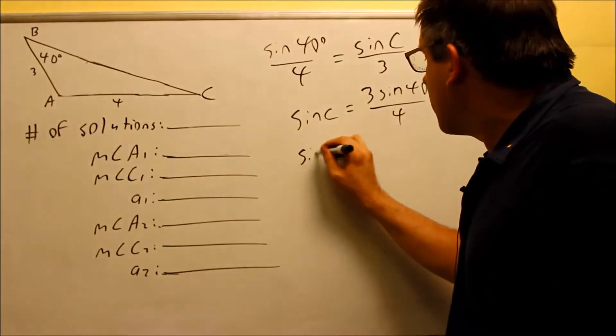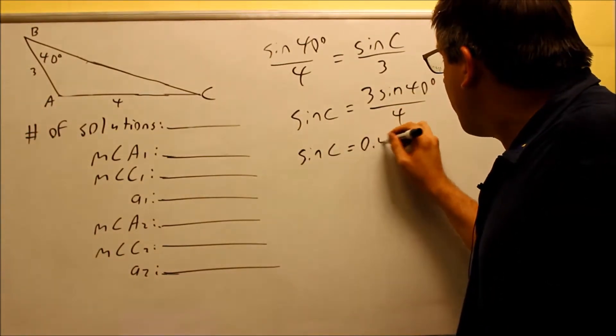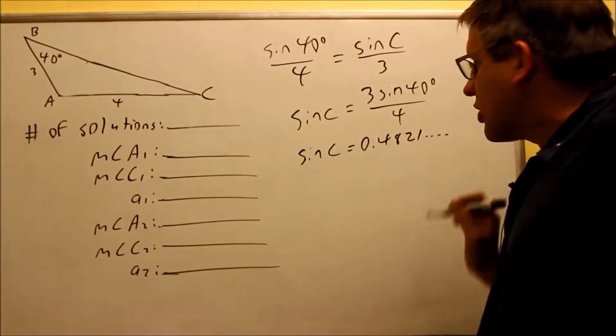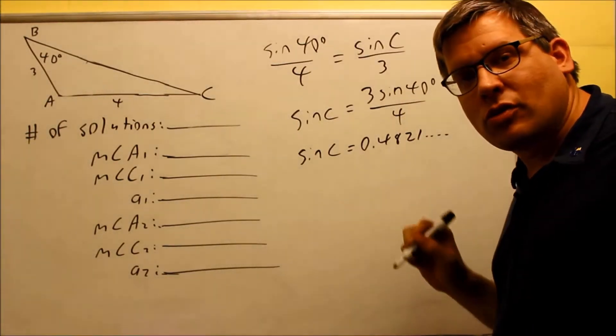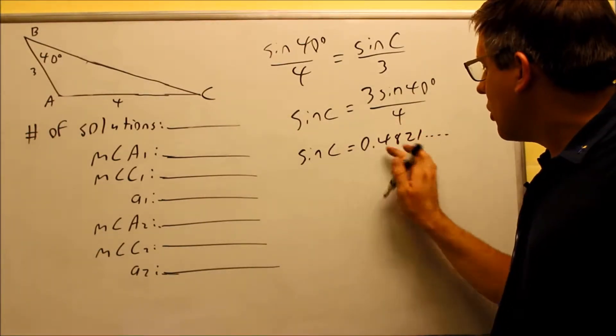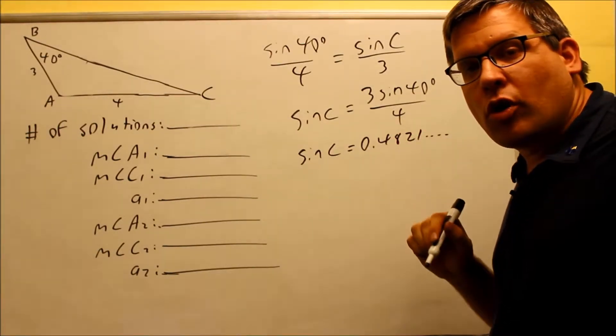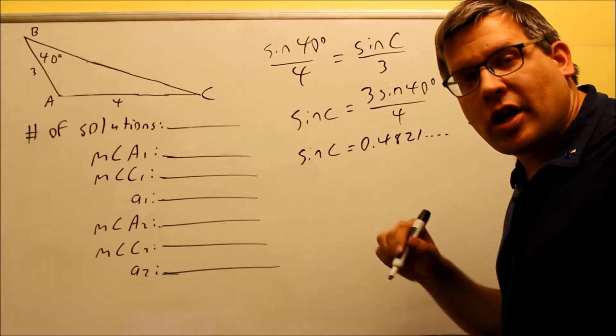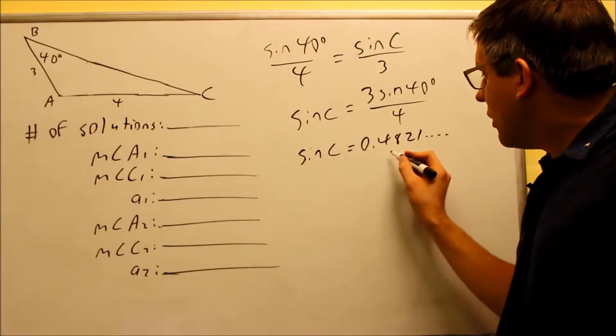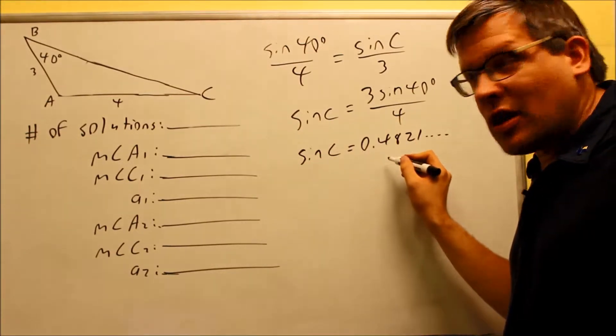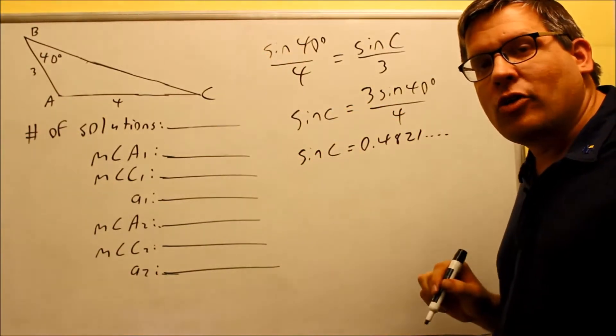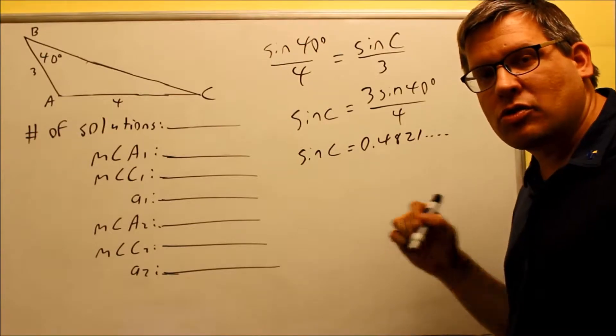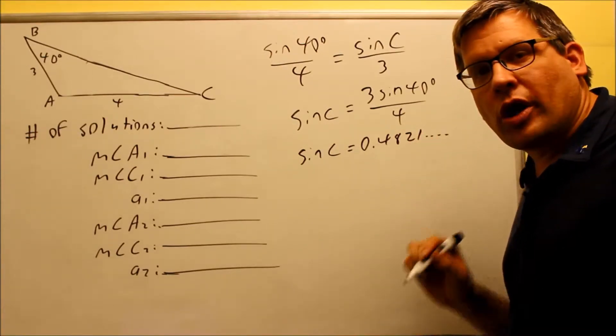If I put this into the calculator, sine C is going to be 0.4821 with some more decimals. So first of all, what that's going to tell me is I know that at least I'm going to have one solution. Because if this number was not between negative 1 and 1, if it was bigger than 1 or less than negative 1, that would tell me that I'm not going to get any solutions out of that. So I would go ahead and put a 0 and I can just cross out all the blanks and then that would be it.